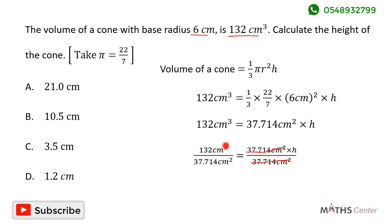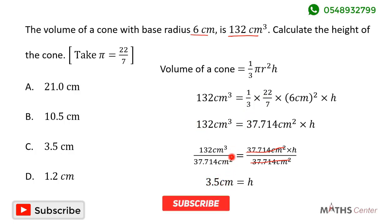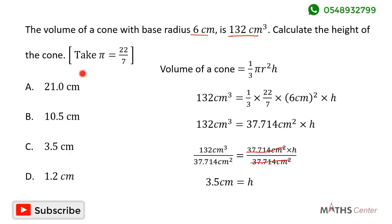132 centimeters cubed divided by 37.714 centimeters squared gives us 3.5 centimeters. So the height of the cone h is equal to 3.5 centimeters. When we look through the options we can see that the correct option is C.